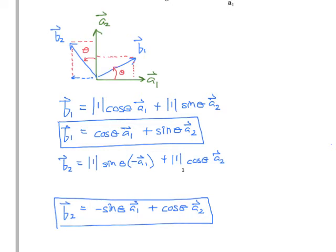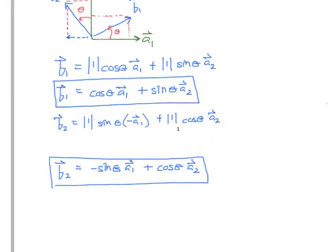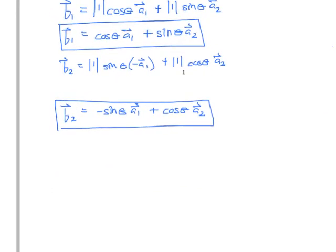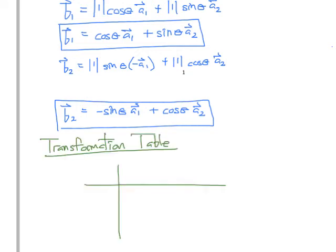Now that we've created these mathematical relationships, let's put this in a form that makes it easier to use. We'll insert these into a transformation table. In the table we'll place all of our basis vectors. We'll have A1 and A2 along the top row, and then B1 and B2 along the first column. What relates these two together is that B1 is related to A1 through cosine theta. So we insert cosine theta into the cell that joins A1 and B1. Likewise, B1 is related to A2 through a positive sine theta.